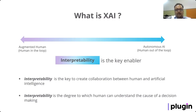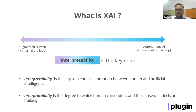Explainability also keeps the human in the loop — it is the bridge between augmented humans and autonomous AI systems. For a fraud detection system, it can be a set of features with their relative importance that led to a transaction being classified as fraud. For an image classification model, it can be the set of pixels with their importances. For sentiment analysis, it can be those words or groups of words which help classify a tweet or blog as positive or negative sentiment.